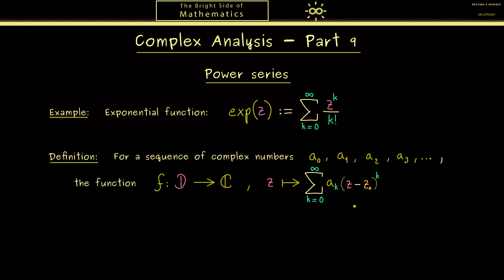However since later it will be important that we can shift the whole function by a fixed number z_0 I already introduce it here. So we simply have (z - z_0) to the power k. And I can already tell you this z_0 is often called the expansion point.